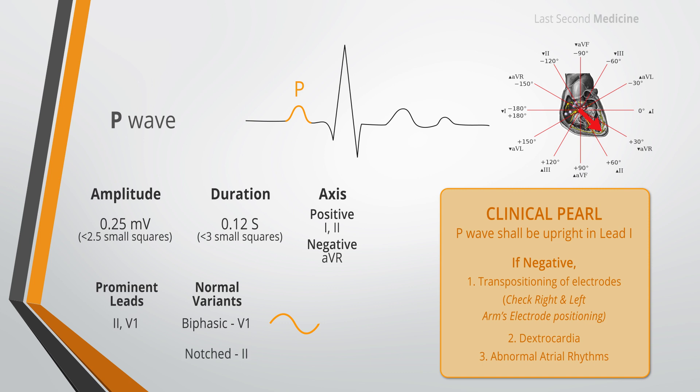Normal P waves may have a slight notch, particularly in lead 2. Bifid P waves result from slight asynchrony between right and left atrial depolarization. A pronounced notch with a peak to peak interval of more than 1 millimeter, which is 0.04 seconds, is usually pathological and is seen in association with left atrial hypertrophy, for example due to mitral stenosis.